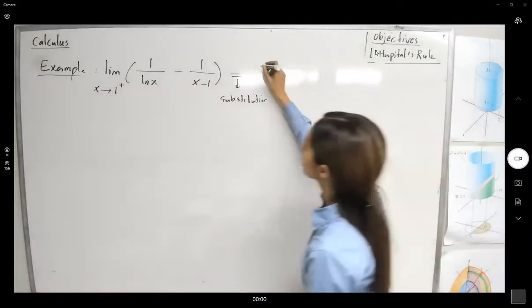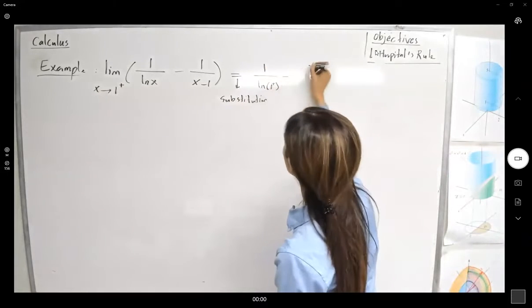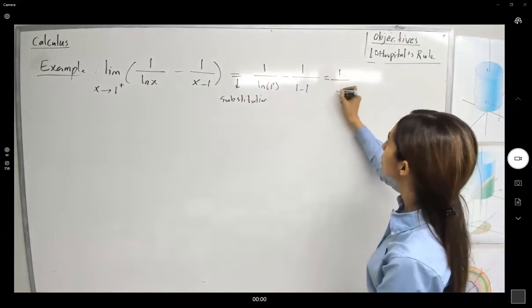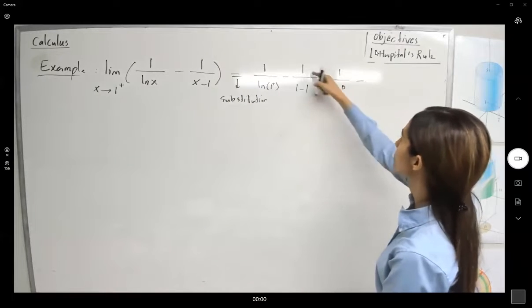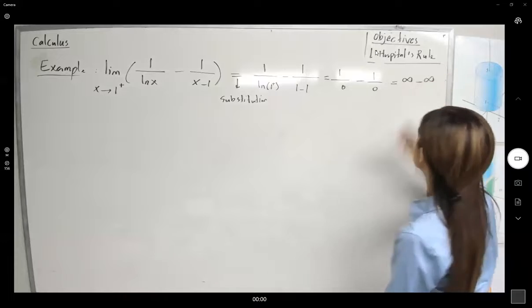If you do the substitution, you get 1 over ln of 1 from the right minus 1 over 1 minus 1, which is 1 over ln of 1, which is 0 minus 1 over 0, which is infinity minus infinity.